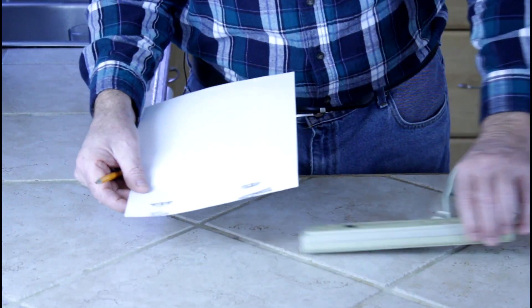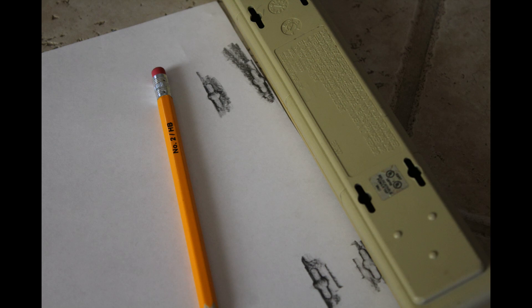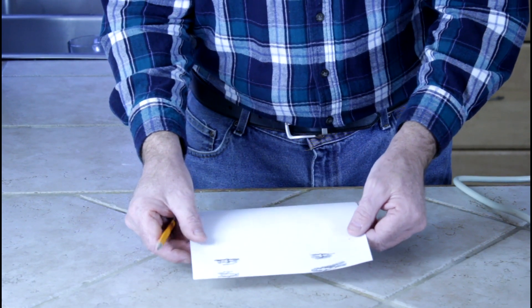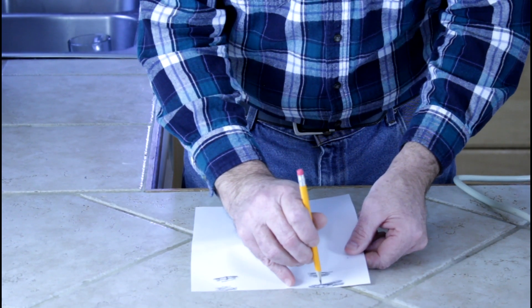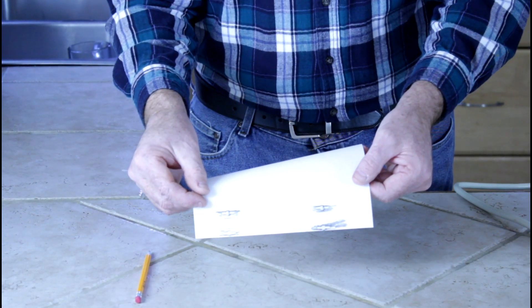See how easy that was to transfer those mounting holes? Now just transfer that to wherever you want to mount it. Take your small pilot bit and drill right in the middle of those holes, and that's where your screws go.